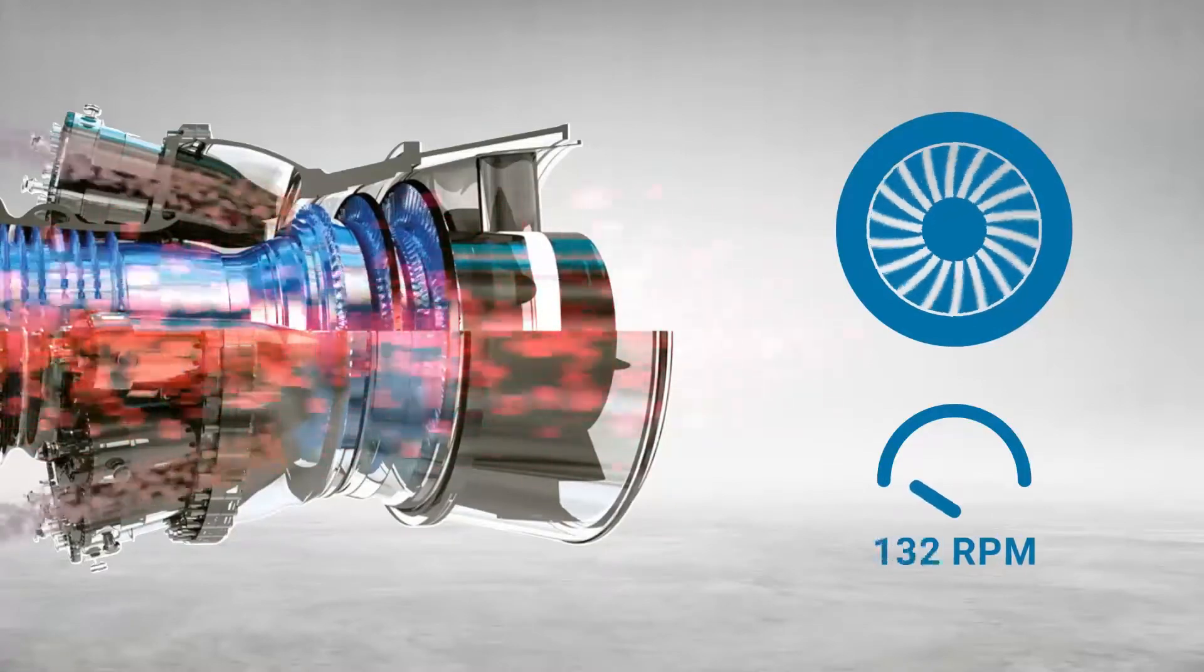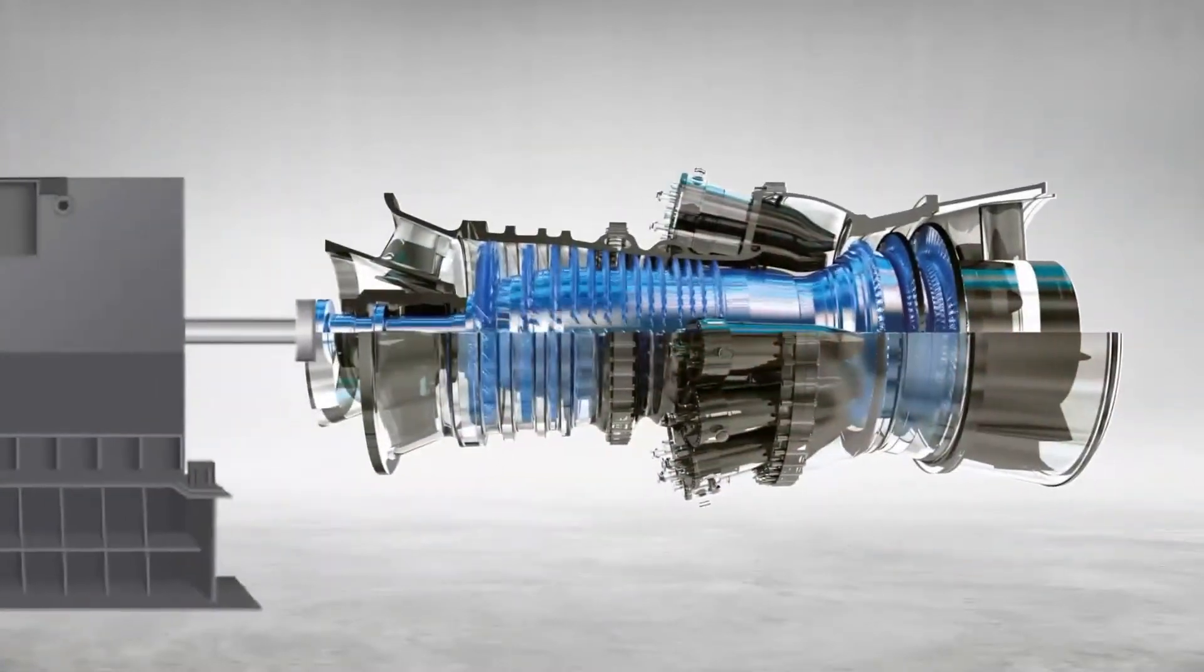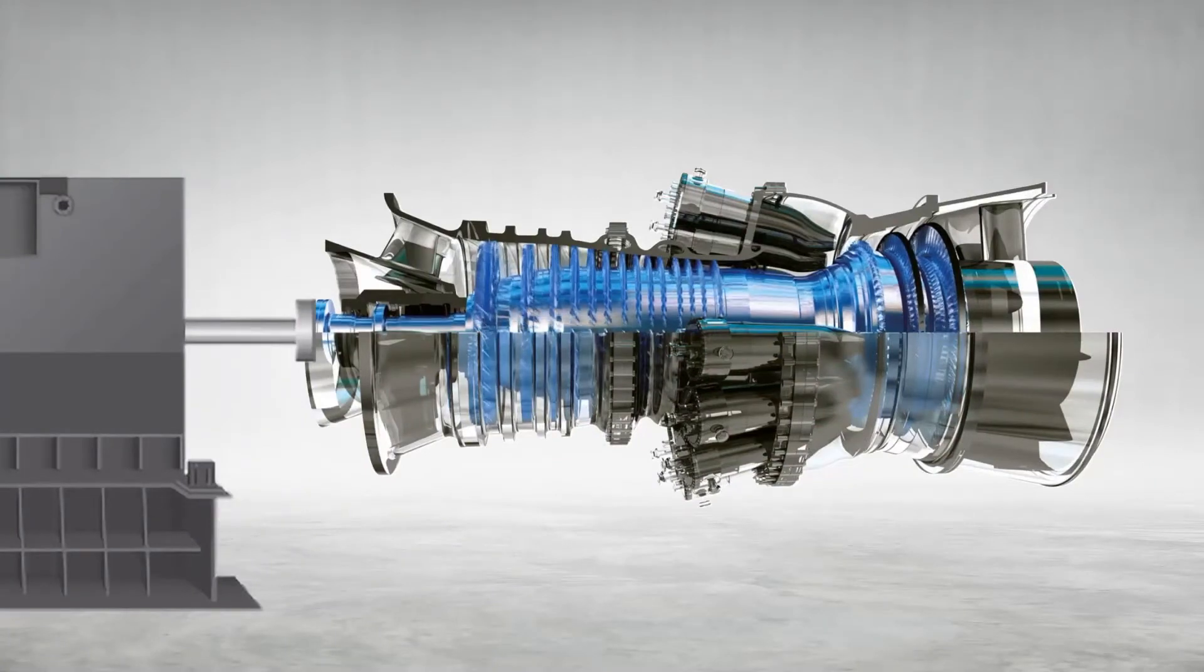This extremely hot and pressurized gas will go through the turbine blades and will cause the turbine shaft to rotate to more than 3000 RPM. This energy will go from the shaft to a generator to produce electricity.